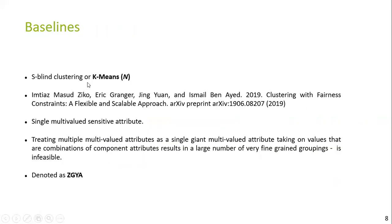The baselines used for comparison are: spline clustering, denoted as K-means of N, which is the clustering done using task-relevant attributes alone. This clustering is expected to generate the best quality clusters in terms of cluster coherence because no fairness conditions are considered. Hence, our fair clustering algorithm is not expected to beat spline clustering in terms of cluster coherence, but we expect to beat it with respect to the fairness of the clusters generated. The second baseline is the work described in 'Clustering with Fairness Constraints: A Flexible and Scalable Approach,' published in 2019. This is again a modification of K-means clustering, but it is designed for scenarios involving a single multi-valued sensitive attribute. This work is noted as ZGYA hereafter.